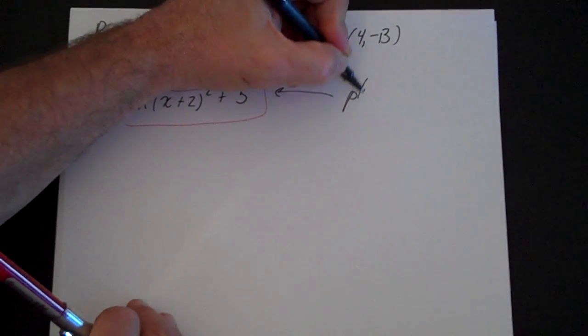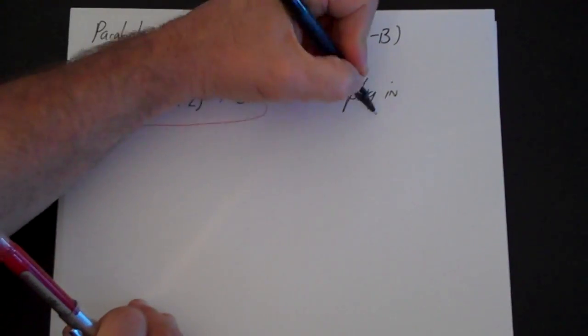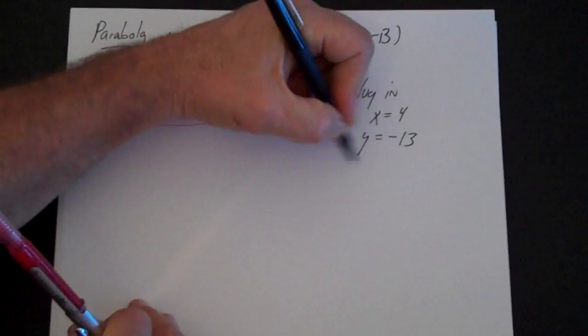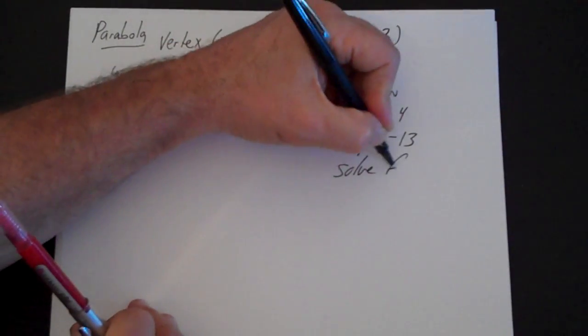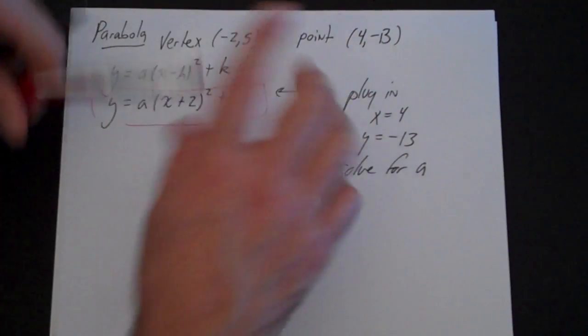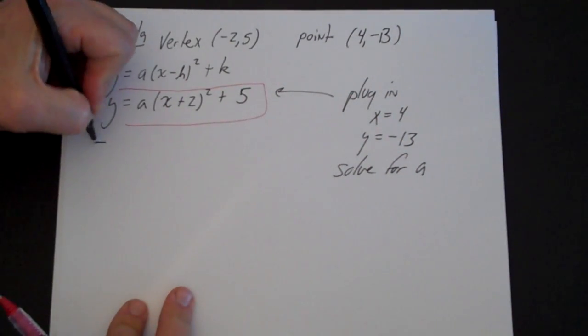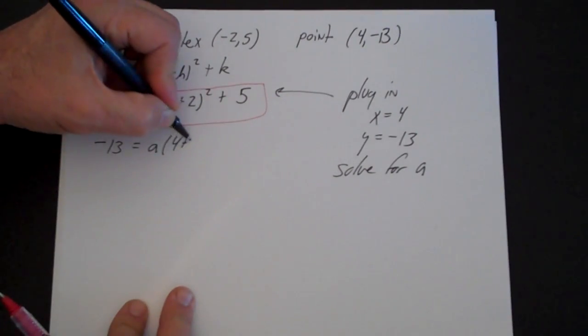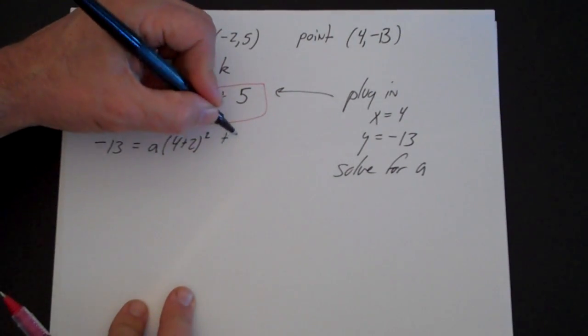Now I am going to plug in x = 4, y = -13, and I am going to solve for a. Because I know that is the point (4, -13). So I have -13 = a(4 + 2)² + 5.